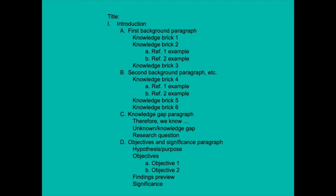In each background paragraph, you're going to have your knowledge bricks and your references. In the knowledge gap paragraph, you'll have signals or signposts to the readers showing that you're introducing a knowledge gap, and the research question will come in that paragraph. You should also propose your hypothesis or purpose, list your objectives, and optionally give a findings preview and a significance.